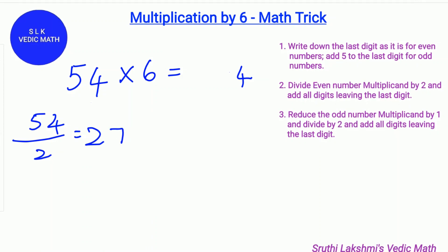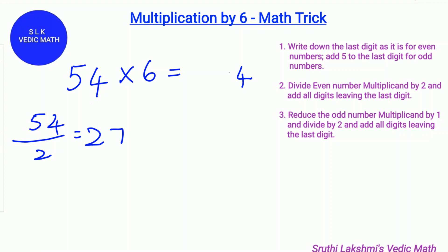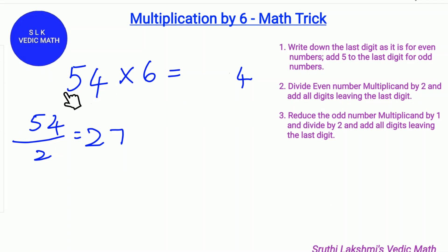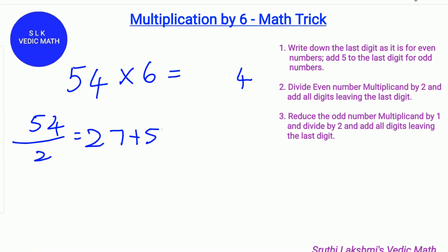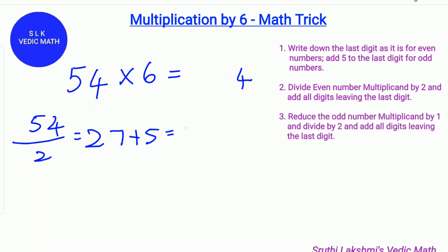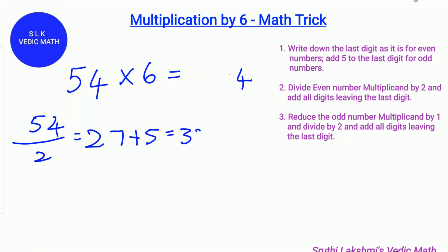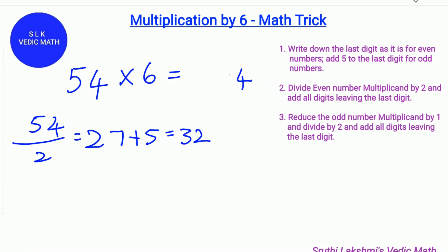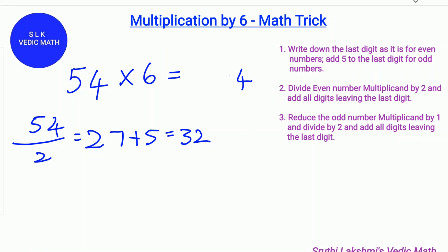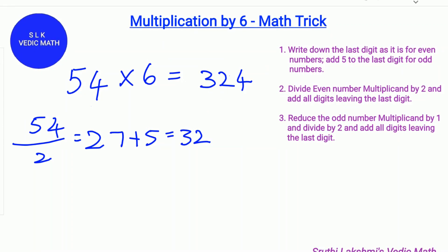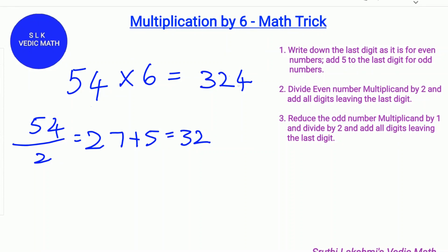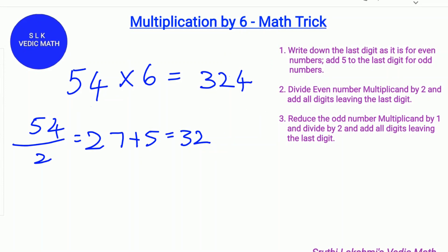We add all the digits leaving the last digit 4 to 27. Since 5 is the only digit, we add 27 plus 5. 27 plus 5 is 32. So we write this 32 over here. So 54 times 6 is 324.